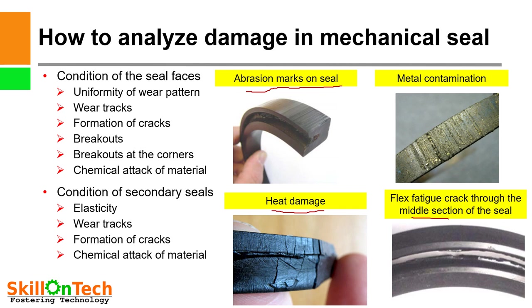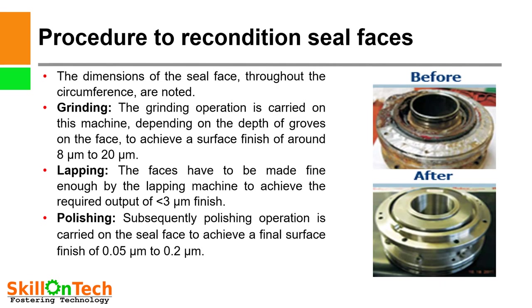Metal contamination: here you can see metal contamination on the seal faces — the metal is contaminated with the fluid handled or the sealant used for cooling or lubricating the seal faces. So we have to analyze properly the reasons for damage of a mechanical seal.